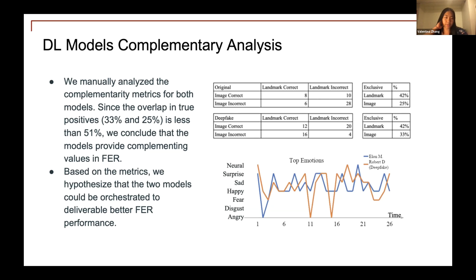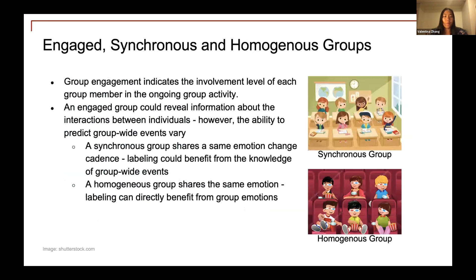Before moving on to group emotion synthesis and modeling, I want to explain a few important concepts our research references. These concepts characterize three different group engagement levels. An engaged group can reveal information about interactions between individuals, though many group-wide events are unpredictable. A synchronous group shares the same emotion change cadence, and labeling can benefit from knowledge of group-wide events. A homogenous group shares the same emotion, and labeling can directly benefit from group emotions.